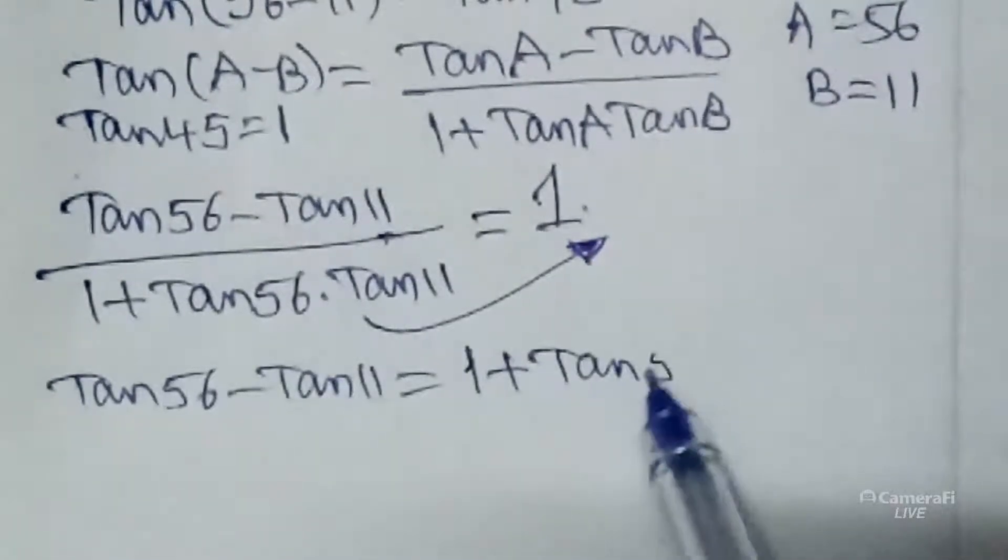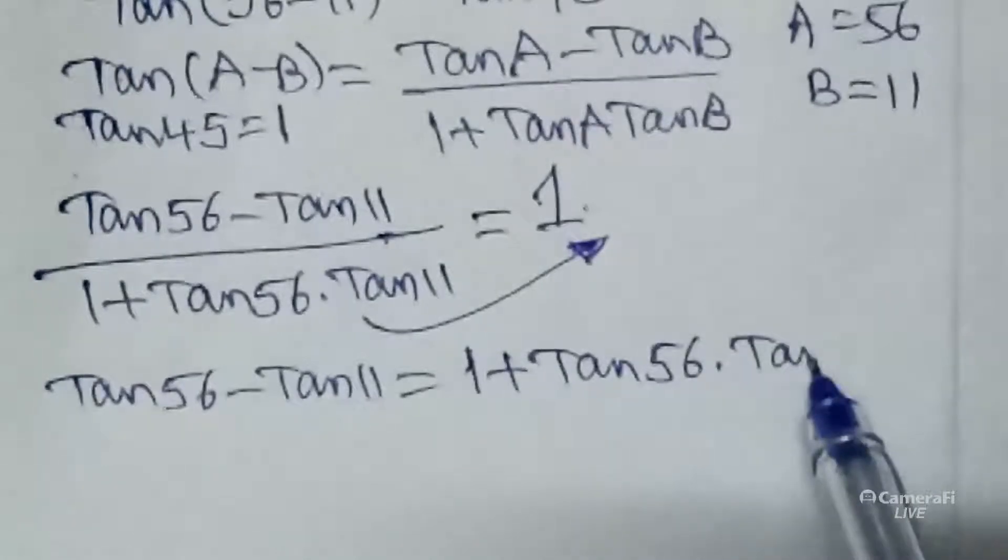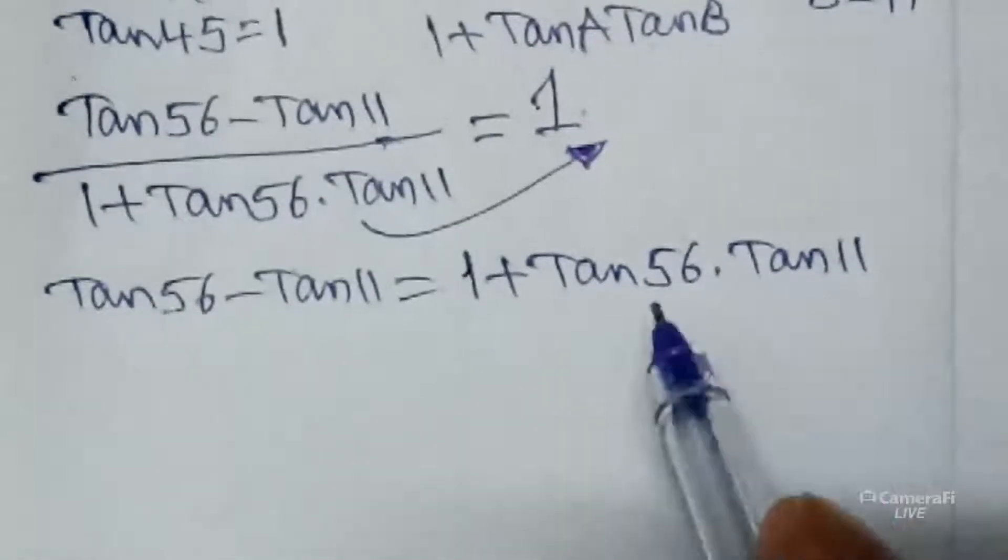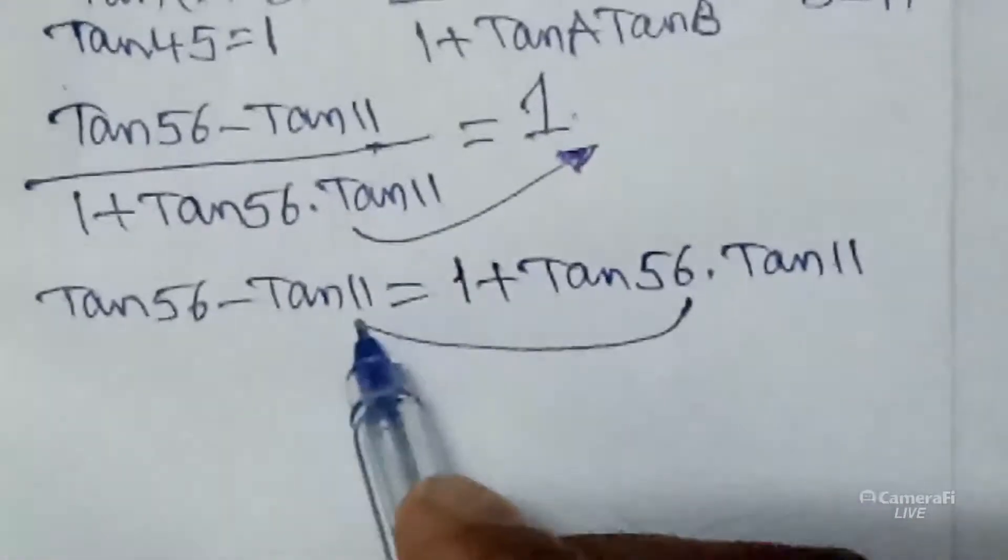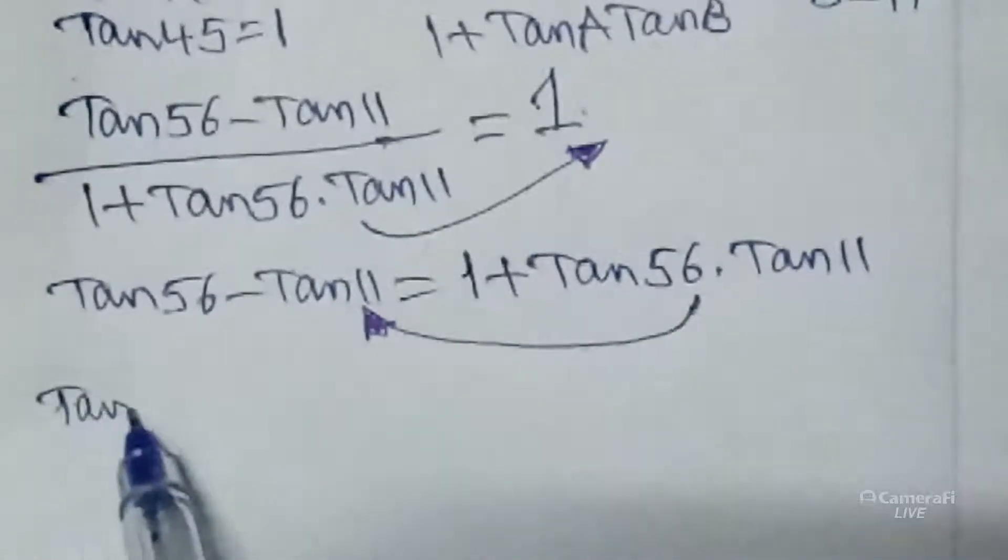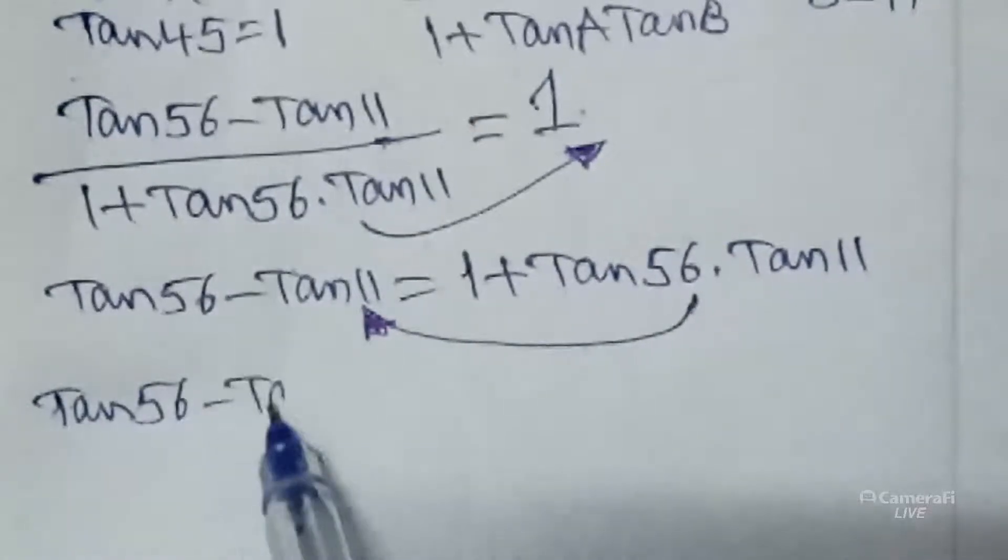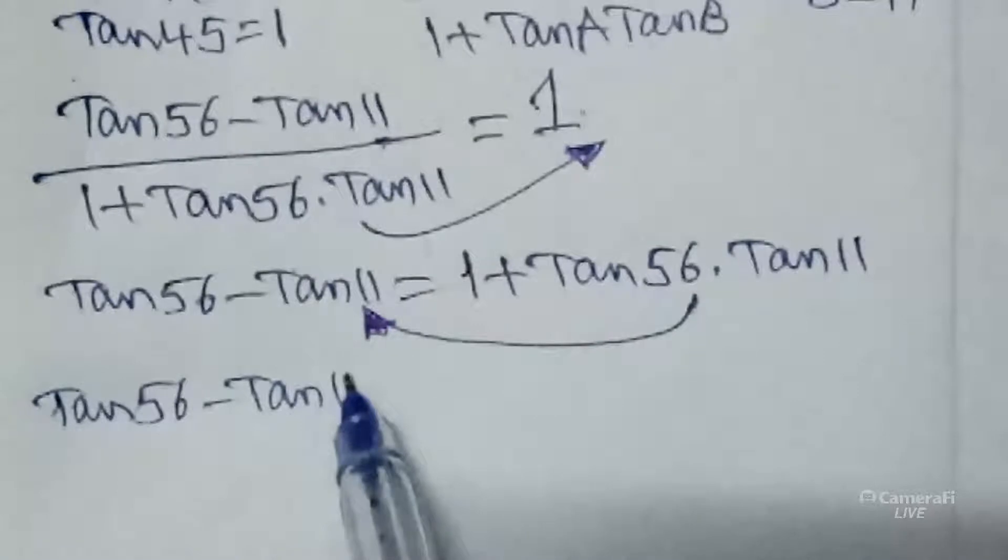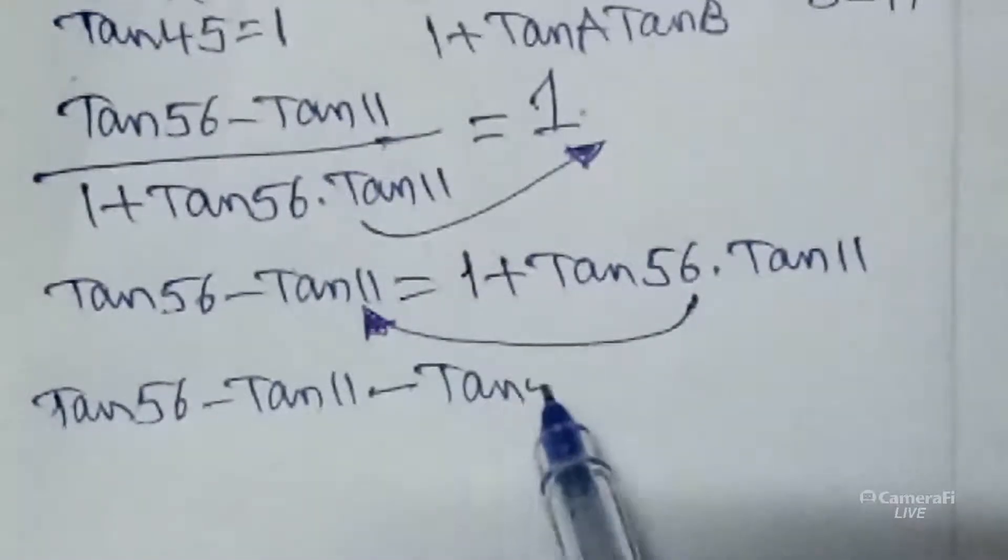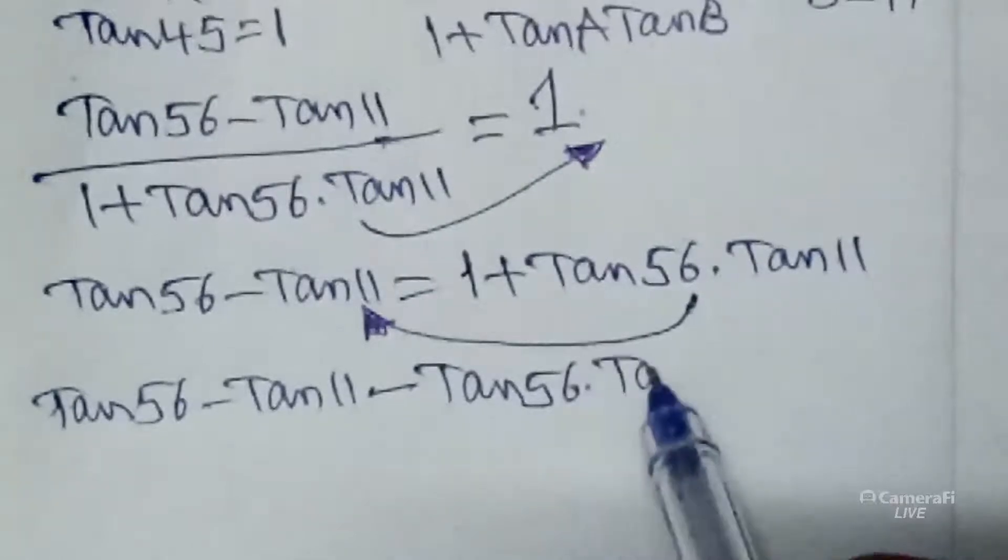The denominator value will come, so 1 plus tan 56 into tan 11. According to our question, this part coming into left side, we get tan 56 minus tan 11. Positive value coming into this side gets minus, so minus tan 56 into tan 11 equals to 1.